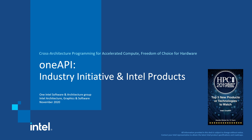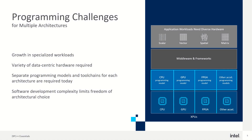OneAPI is a cross-architecture programming model for accelerated compute, giving you freedom of choice for hardware. Let's understand the programming challenges for multiple architectures — there's a lot of growth in specialized workload requirements. You could need a CPU for some applications, a GPU for something else, an FPGA for another, and the hardware-to-software dependency is really troublesome. We need separate programming models and toolchains for each architecture, which OneAPI is here to break.